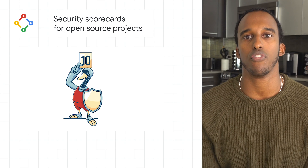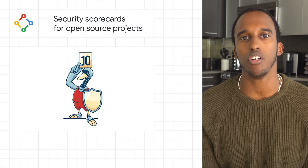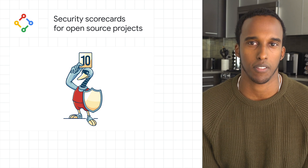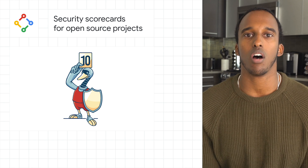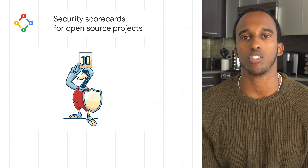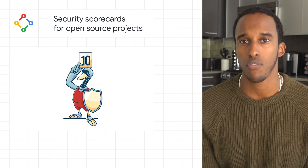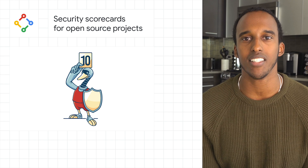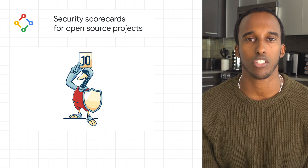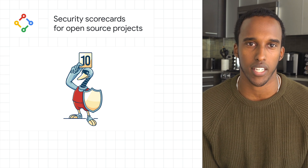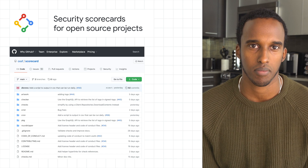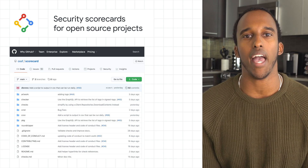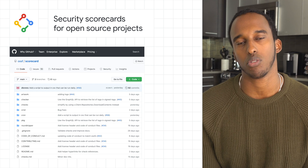Scorecards is one of the first projects being released under the Open Source Security Foundation since its inception. The goal of the Scorecards project is to auto-generate a security score for open source projects to help users as they decide the trust, risk, and security posture for their use case. Check out the project on GitHub to learn how to generate a scorecard for any GitHub open source project.